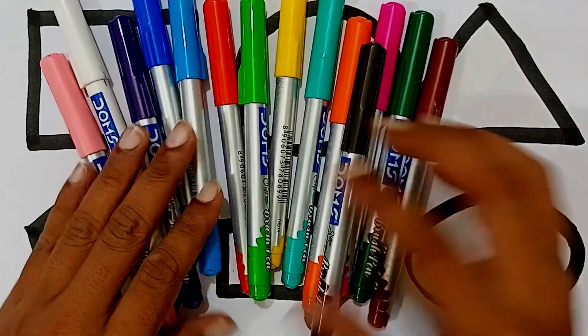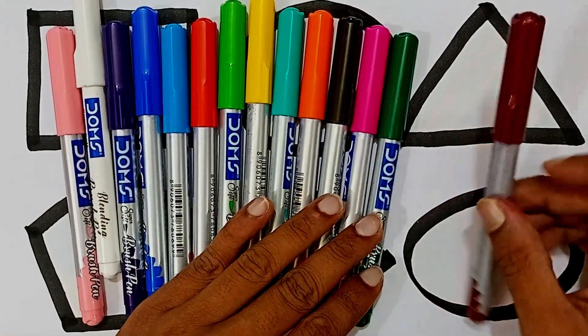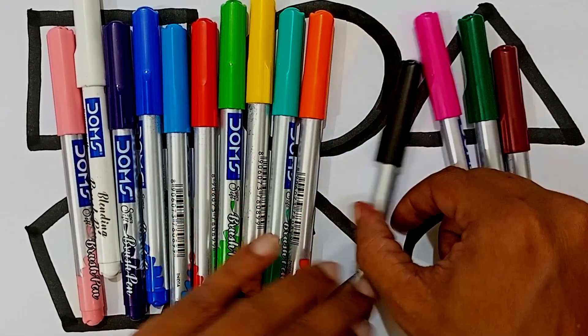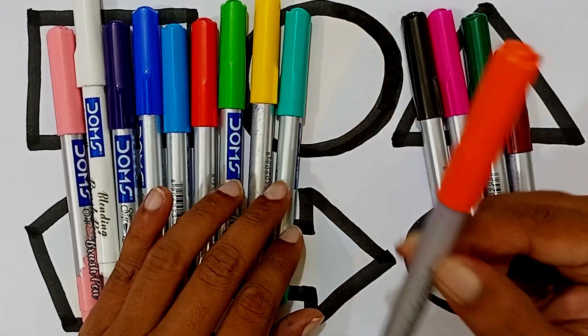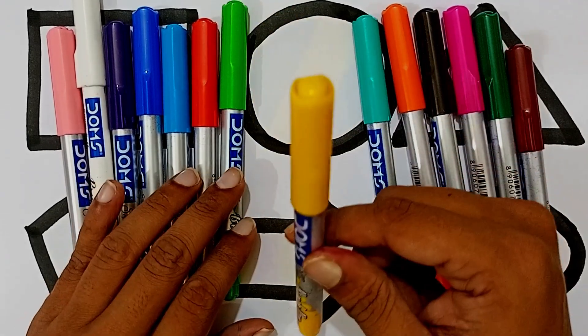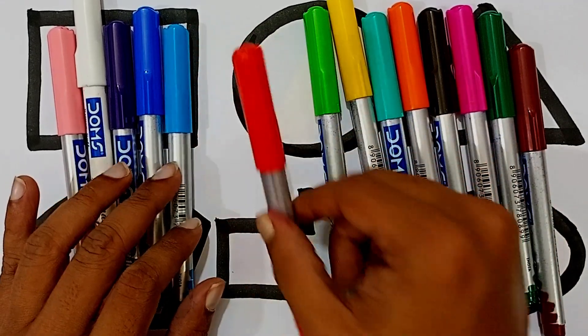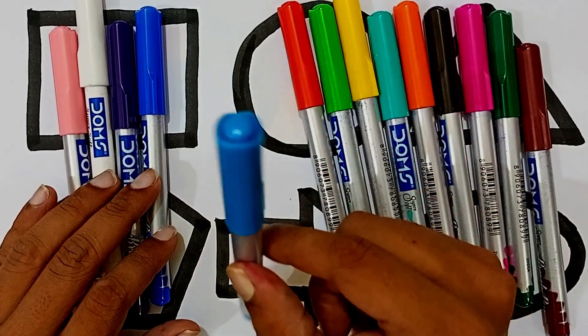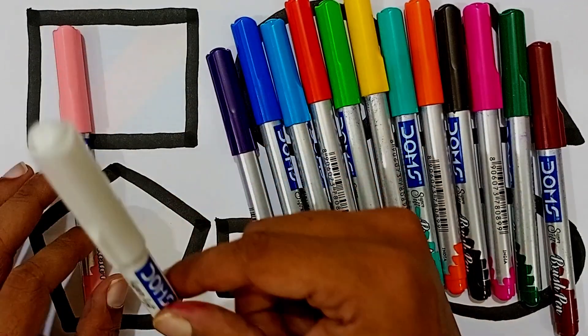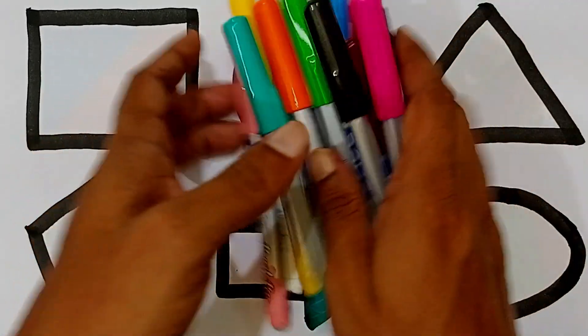Let's learn some colors and color the shapes. Okay. Brown color, green color, pink color, black color, orange color, green color, yellow color, light green color, red color, sky blue color, blue color, violet color, white color, light pink color.